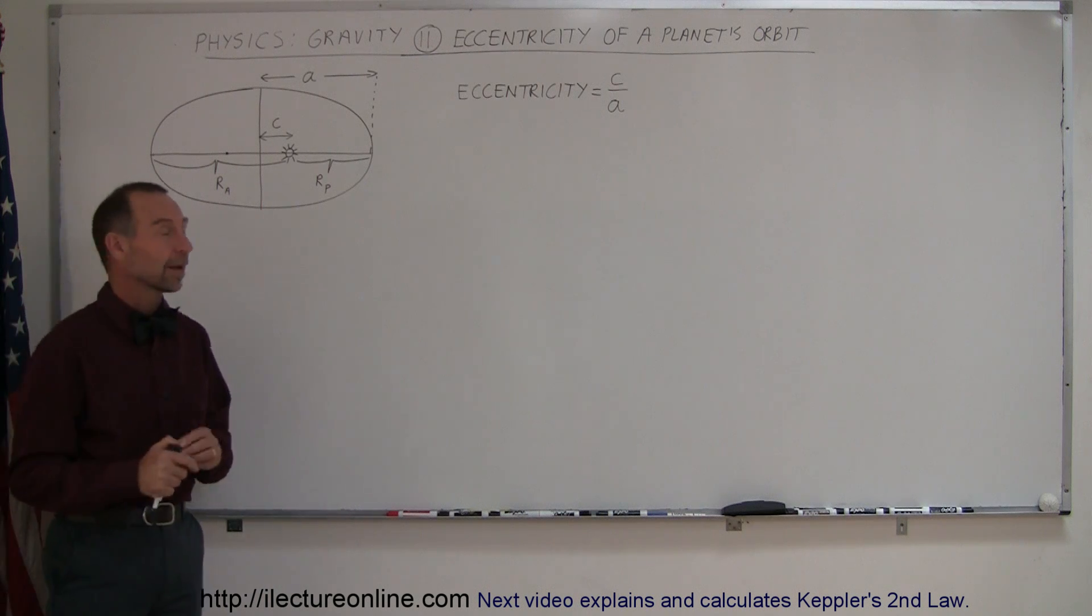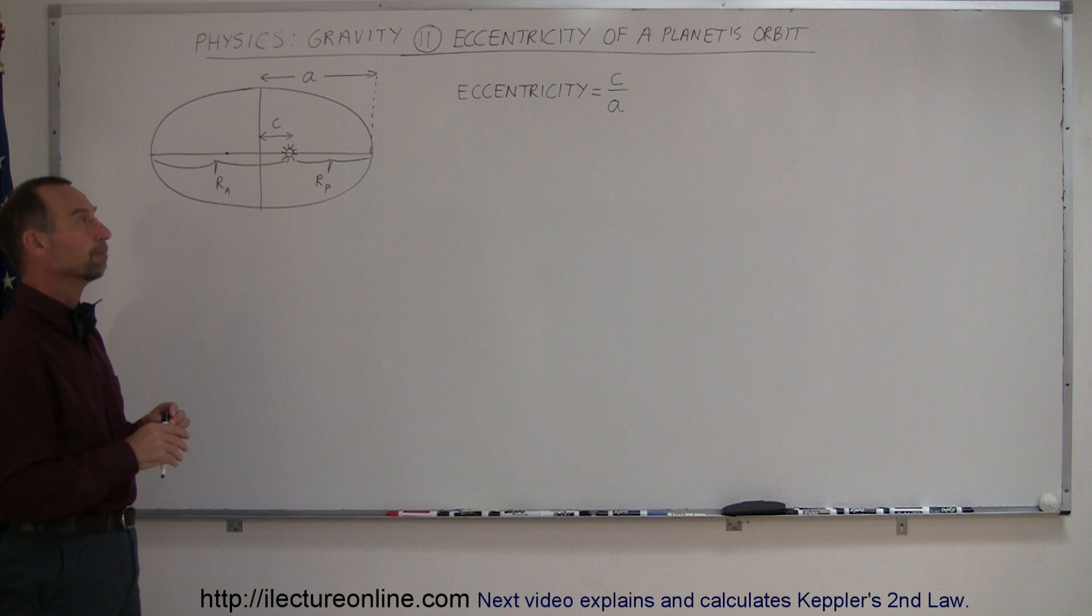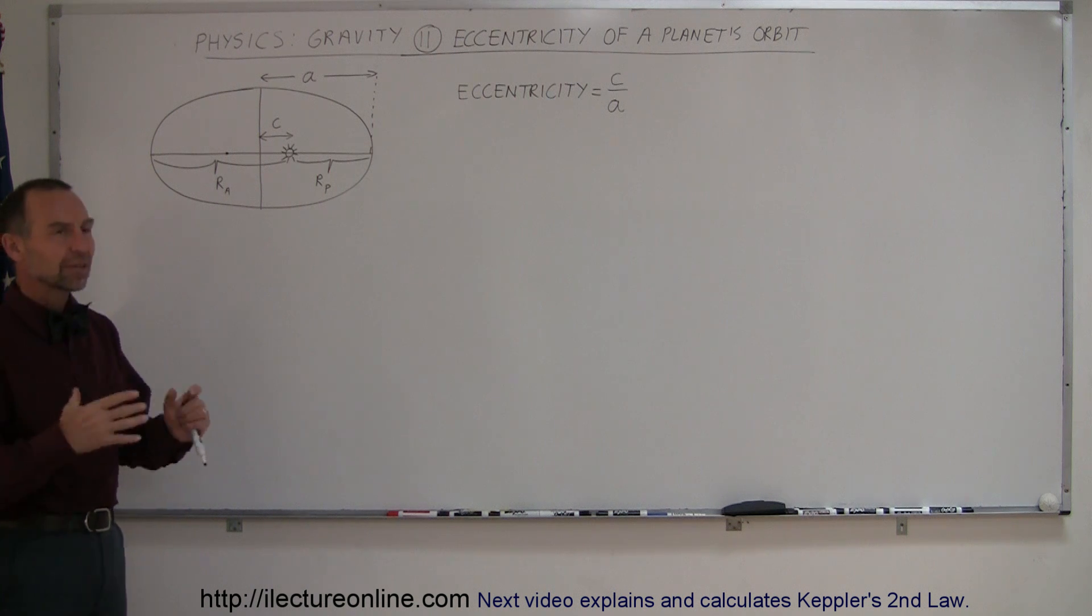Here, following up on the concept of Kepler's first law, is the eccentricity of a planet's orbit. The eccentricity is a measure of how elliptical it is.